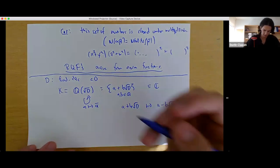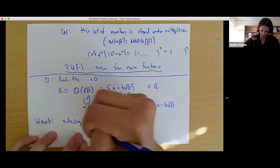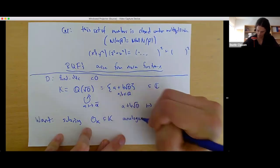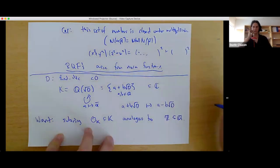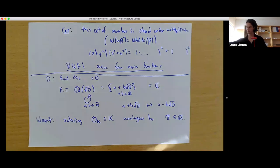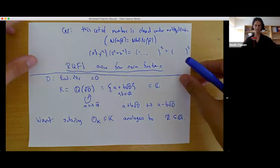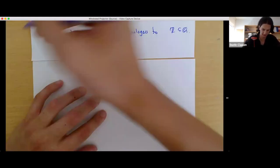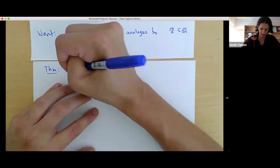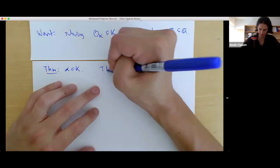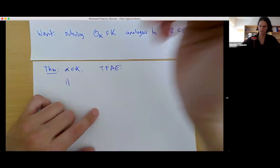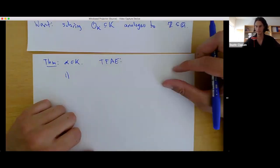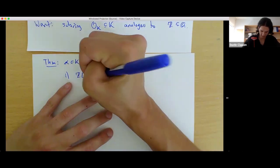We want a subring O_K inside K, which should be as analogous as possible to the integers sitting inside the rational numbers — called the ring of integers of K. For alpha in K, several conditions are equivalent: (1) the subring generated by alpha inside K is finitely generated as an abelian group; (2) alpha is the root of a monic polynomial with integer coefficients; (3) the minimal polynomial T² − (alpha + alpha-bar)T + alpha·alpha-bar actually lies in Z[T], i.e., the trace and norm of alpha are both integers.